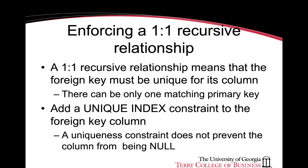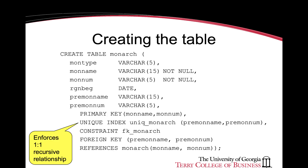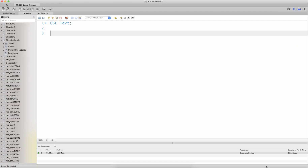While adding a unique index constraint does not prevent null values in the column, it does prevent more than one value from appearing. Here is the syntax to create the table for a recursive one-to-one relationship. When querying such a table, one needs to use an aliasing approach to relate the table to itself.